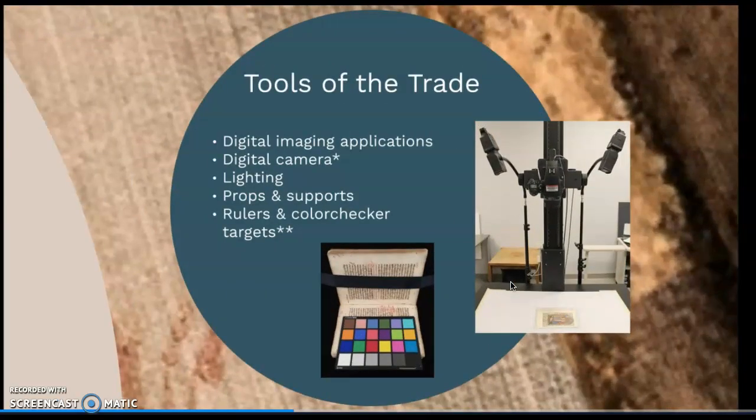Some of the tools of digital surrogacy include imaging applications — some of those might be software or open source applications, with examples such as Golden Thread, Mirador, and Omeka. We would also need a digital camera. Many digital archivists will fashion some of their own tools, ones that work for the kinds of items they are photographing. This can include jerry-rigging different forms of lighting, supports, or props to hold books open or to place cameras at a good angle, as we can see in the image on the right with the lights and camera positioned above the manuscript page for photographing.